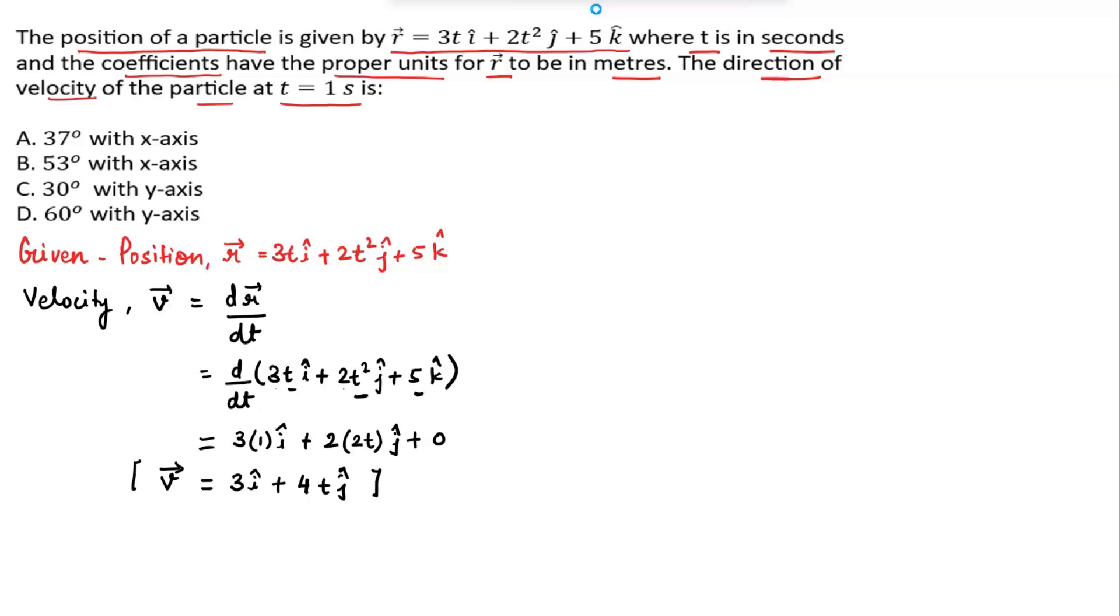Now according to the question, we need to find the direction of velocity at t equals 1 second. So at t equals 1, we get velocity equals 3i cap plus 4t—in the place of t we need to write 1—j cap. So velocity will become v vector equals 3i cap plus 4j cap.